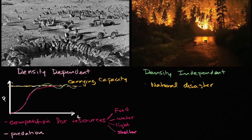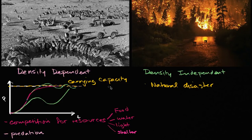With density independent factors, you could have the population growing, and at just some random point there's a density independent factor — a forest fire, a flood, or something else. Then maybe the population grows from there and eventually gets closer to its carrying capacity. But the density independent factors are not related to where we are on this curve — they can happen at any time, and to some degree they feel a little bit more random.